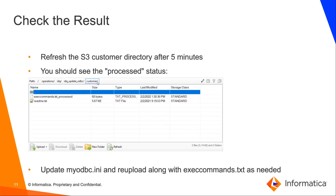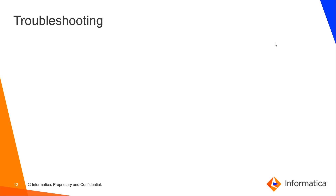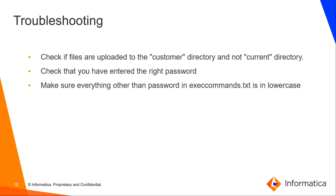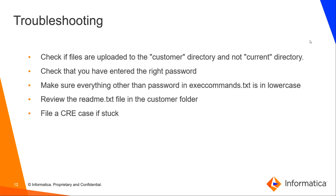After five minutes has passed, you can refresh the directory and you should see a process status appended there, along with the myodbc.ini file being removed. Each time you need to update odbc.ini, you can complete that same process, which will also work if you need to remove entries. If you have uploaded your files and five minutes has passed and you still do not see any change, check that you uploaded them to the customer directory and not the current directory. You can also check that you entered the right password, and make sure everything other than the password is in lowercase. There is also a README file in the customer folder with all the steps and additional troubleshooting tips. You can also file a case with the CRE team if you are stuck.